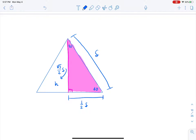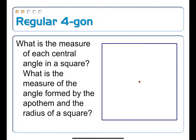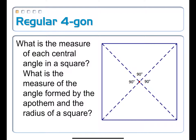Squares are also super special. For a regular four-gon (square), the central angle is 360 divided by 4, which is 90 degrees. Drawing in the apothem cuts that in half, giving 45 degrees — so we get a 45-45-90 right triangle. Whatever the apothem length is, multiply it by the square root of 2 to get the radius. We need the apothem and the perimeter to find the area.